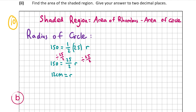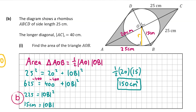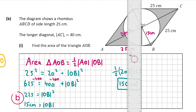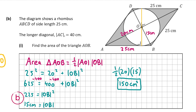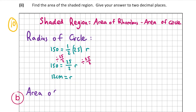Now we can work out the area of the rhombus and the area of the circle. The area of the rhombus is base times perpendicular height. The base is 25 and the perpendicular height is the diameter of the circle — the vertical yellow line. Since the radius is 12, the diameter is 24. So the area of the rhombus is 25 times 24, which equals 600.